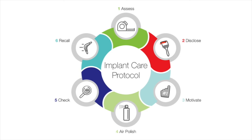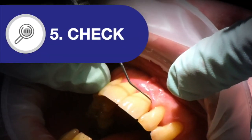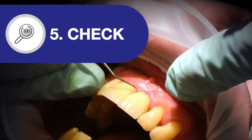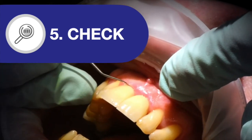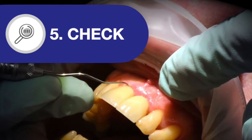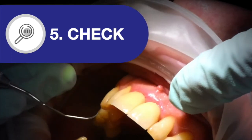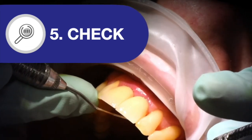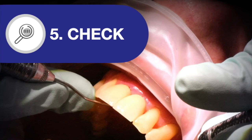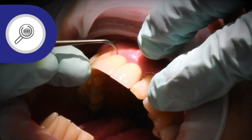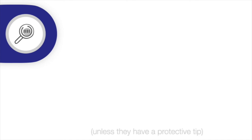Once air polishing is complete, use an explorer to check for any foreign bodies in the sulcus. Calculus can be removed with a titanium curette or scaler — and because biofilm can live under calculus, a second round of air polishing is recommended if you remove an accretion. Other foreign bodies may include residual cement, bone chips, or tooth fragments; careful evaluation of the radiograph helps identify these. For instruments: plastic scalers won't do much, stainless steel will scratch the implant surface, and ultrasonic or piezo scalers should only be used if they have a protective tip. Stick to a titanium scaler or curette — these are available from PDT.